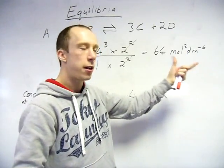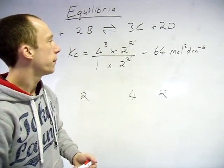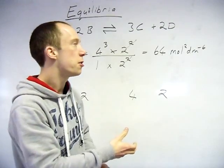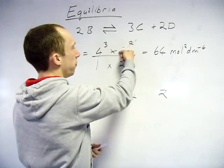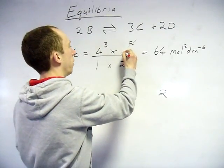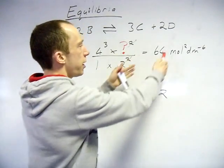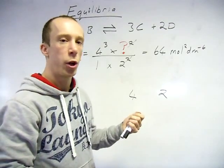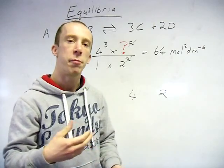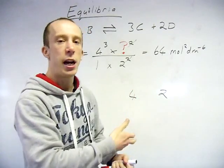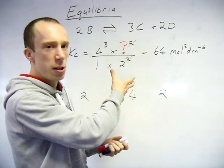Other ways of asking this question: they could give you the value for Kc and have an unknown concentration. It would just be a case of rearranging the equation to work it out — exactly the same as when you've been given the relative atomic mass and asked to work backwards to figure out the percentage abundance of an isotope.